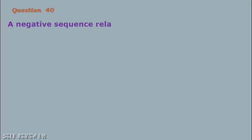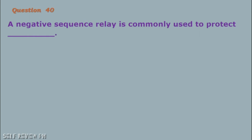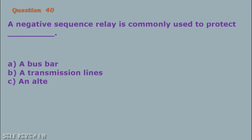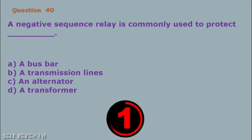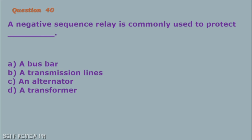Question number 40: A negative sequence relay is commonly used to protect blank. A. A bus bar B. A transmission line C. An alternator D. A transformer. The correct answer is letter C, an alternator.